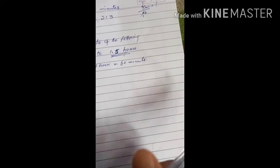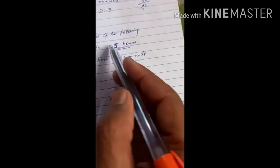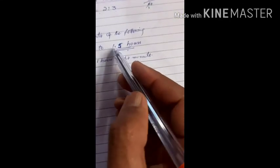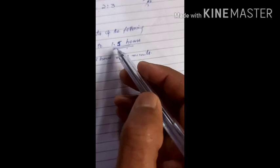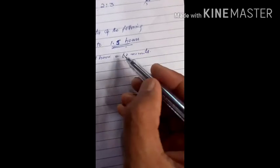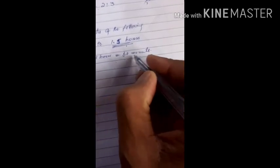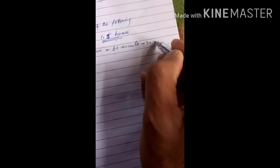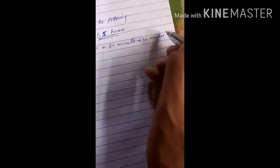We know that one hour is equal to 60 minutes. This 1.5 hours means 1.5 hours, which is one and a half hours. So in half hour there are 30 minutes, making it 60 plus 30 minutes, which is equal to 90 minutes.